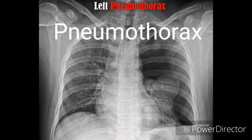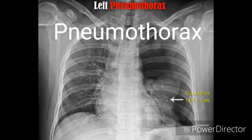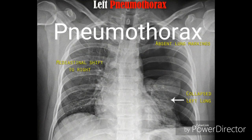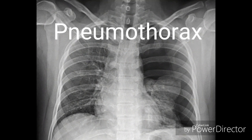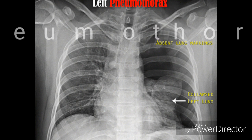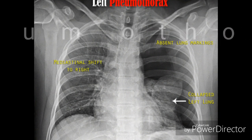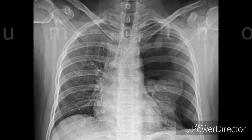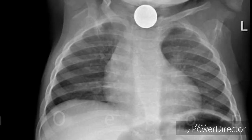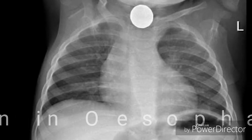Next is the X-ray of left-sided pneumothorax. As you can see in this chest X-ray, there is a left-sided collapsed lung, there is absence of lung markings on the left side, and you can see there is shifting of the mediastinum to the right side.